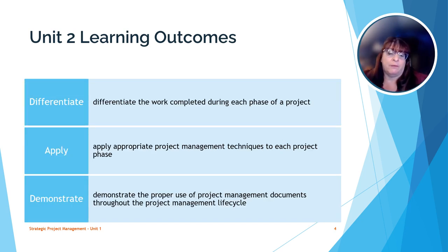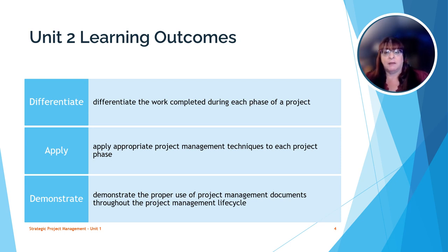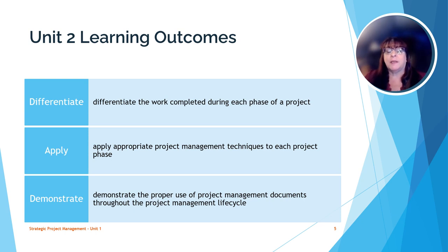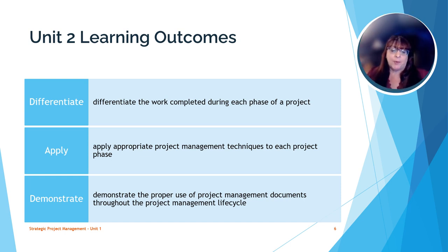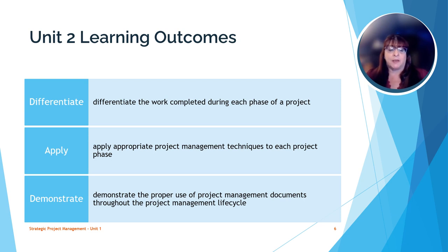Our first learning outcome for this unit is to differentiate the work completed during each phase of the project. So we're going to go through each phase of the project lifecycle and discuss what happens during that phase. Our second outcome is to apply appropriate project management techniques to each project phase, looking at some of the techniques project managers use to manage each phase of the project lifecycle. Our third objective is to demonstrate the proper use of project management documents throughout the project management lifecycle, looking at how a project team will create and use documents to help them keep a project on target for being successful.